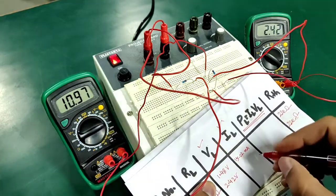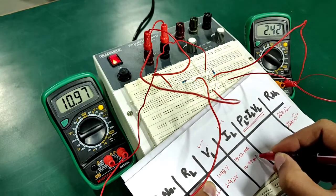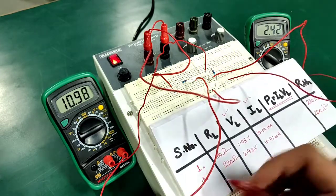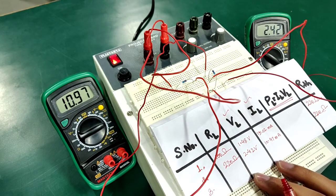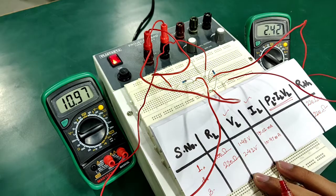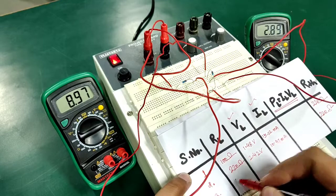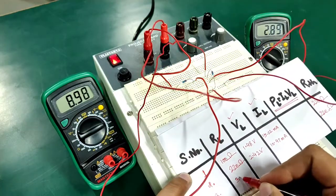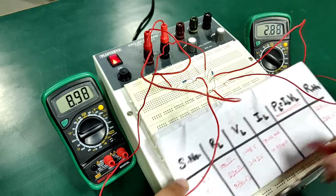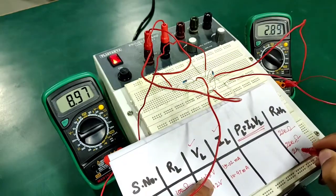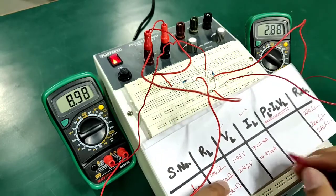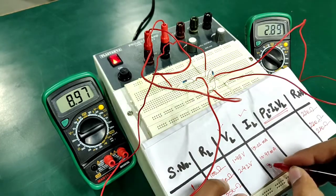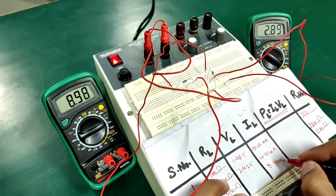Similarly for third case, I'll be replacing my RL with the value which is higher than Rth. The value of RL I've taken here is 330 ohms and Rth has been kept constant. And you can clearly see the variation in voltages and current. So the current is coming out to be 8.98 milliamperes and the voltage is coming out to be 2.89 volts.